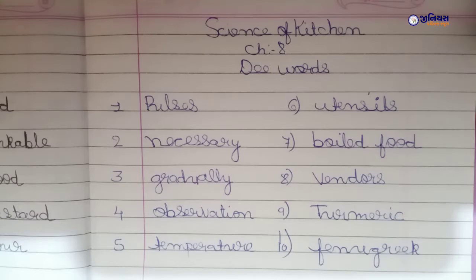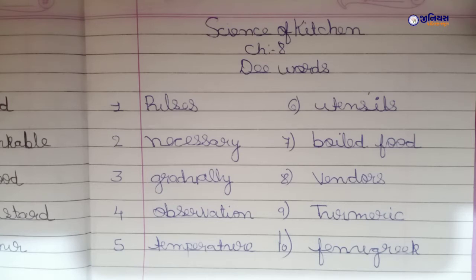Science of Kitchen, Chapter 8. The vocabulary words are: First one is Pulses — Dal in Hindi. Second one is Necessary — Zarooriy. Third one is Gradually — Slowly, Dhiray Dhiray. Fourth one is Observation — Avlokan in Hindi.